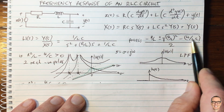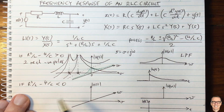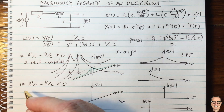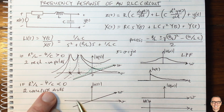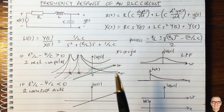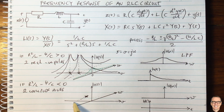Now consider the other case when the term under the square root is negative. We still have two poles, but they are complex with a negative real part. Because the quadratic formula gives plus or minus the same imaginary value, the poles are symmetric around the sigma axis. I draw one pole above and one below the sigma axis, both with the same negative real part.